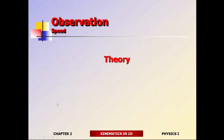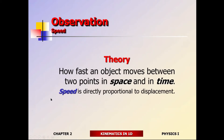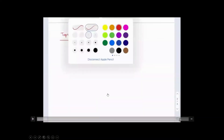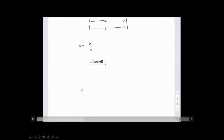Speed — formal definition: speed is how fast an object moves in space and in time. The faster you go, the larger the distance you will cover, so speed is directly proportional to displacement. And obviously the faster you go, the less time it takes to cover that distance, so speed and time are inversely related. This allows us to come up with a mathematical model for speed.